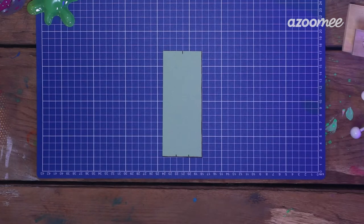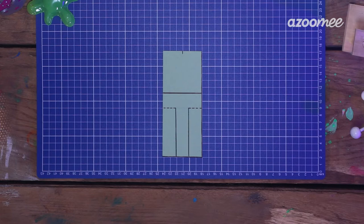Then, about halfway down, measure a line across. A couple of centimeters under that, measure and draw two dotted lines that connect to your bottom markers. Just like this. Then draw another dotted line straight down from the top.